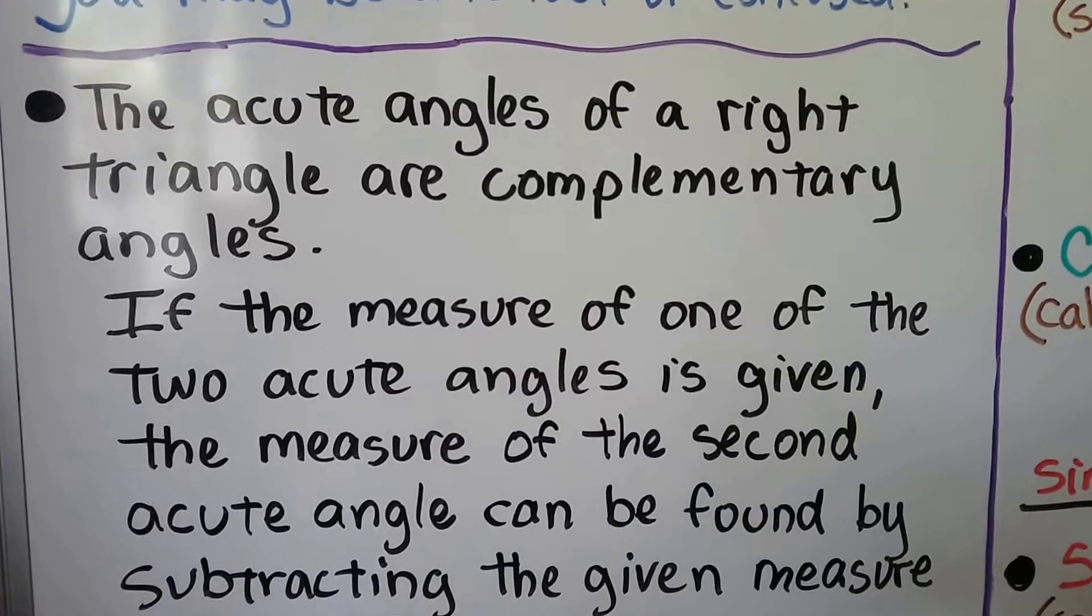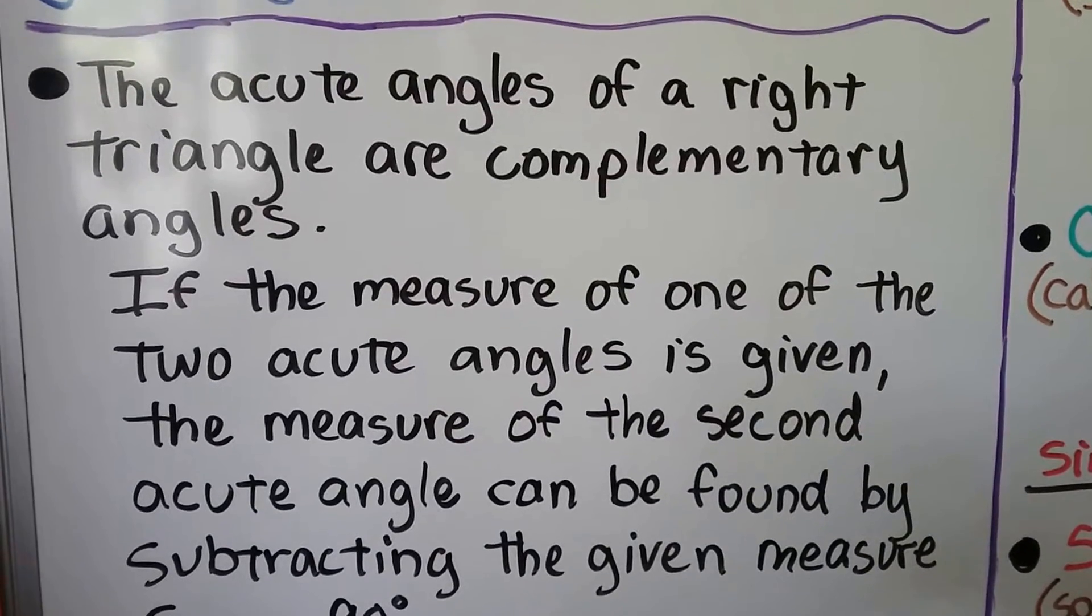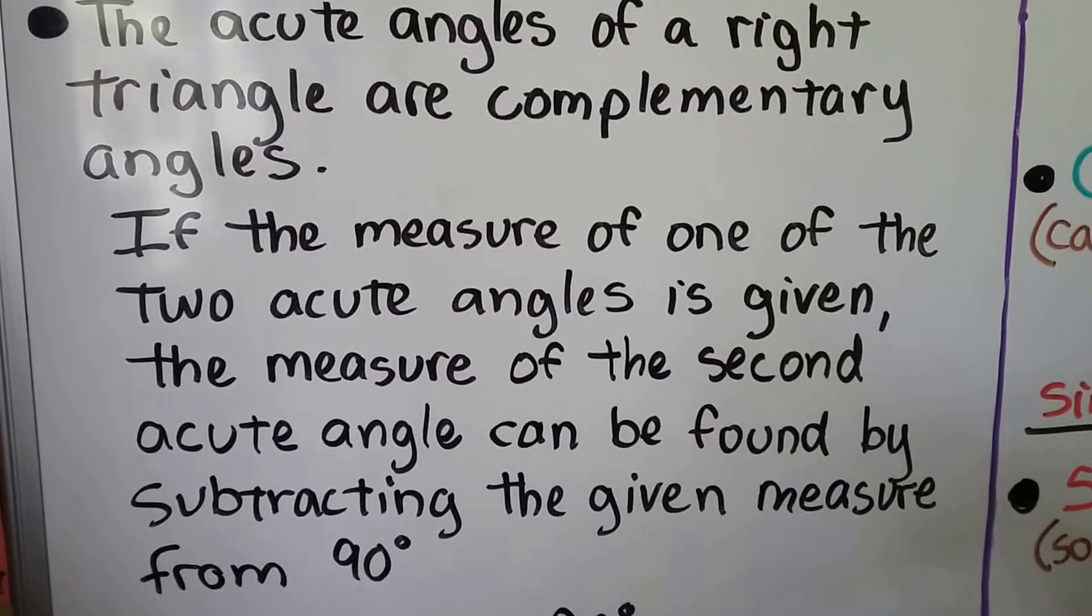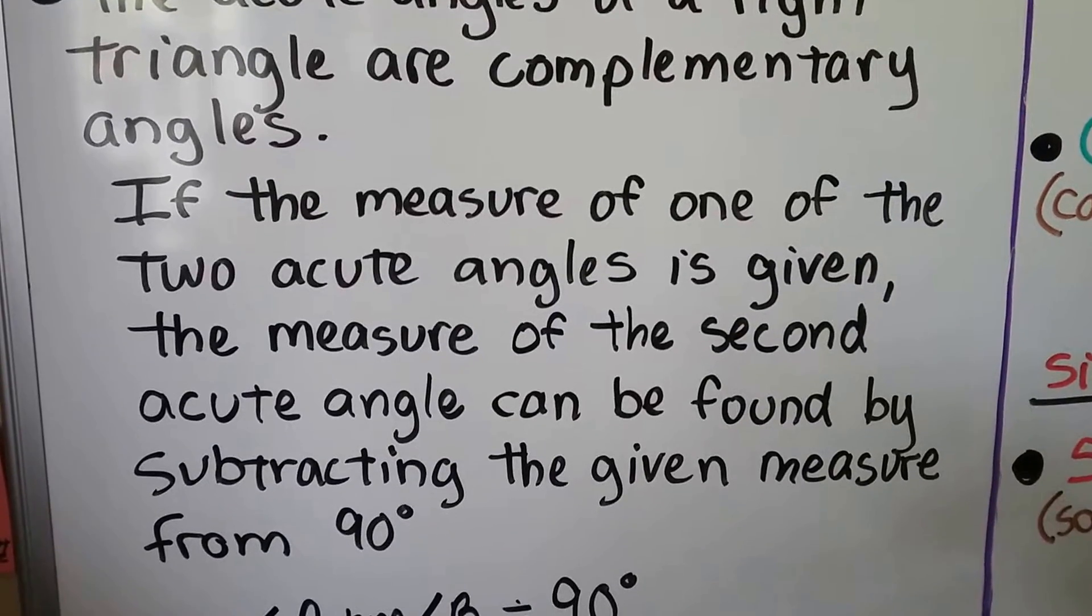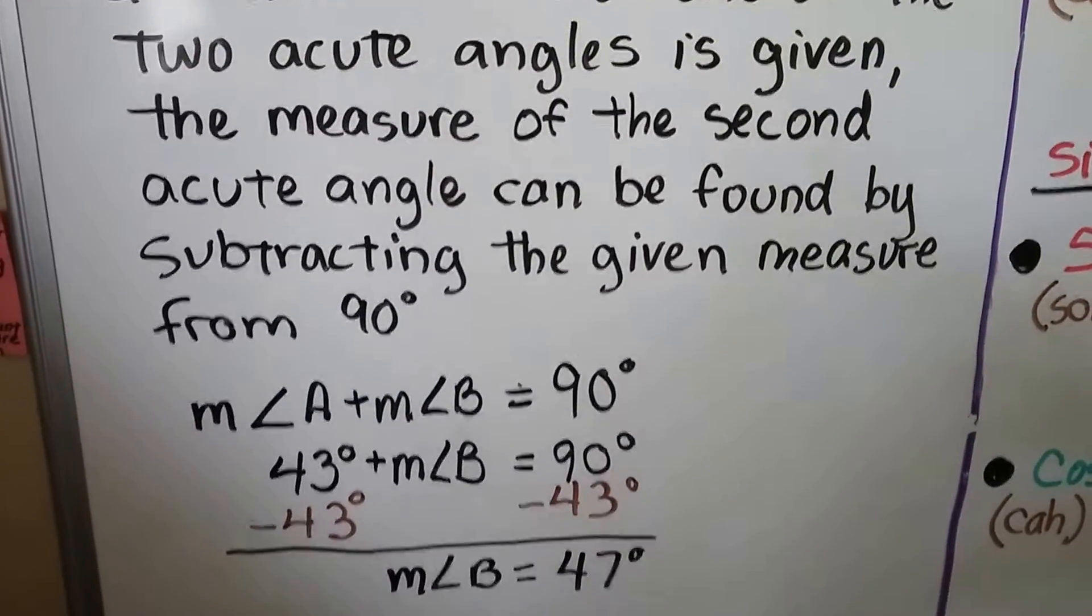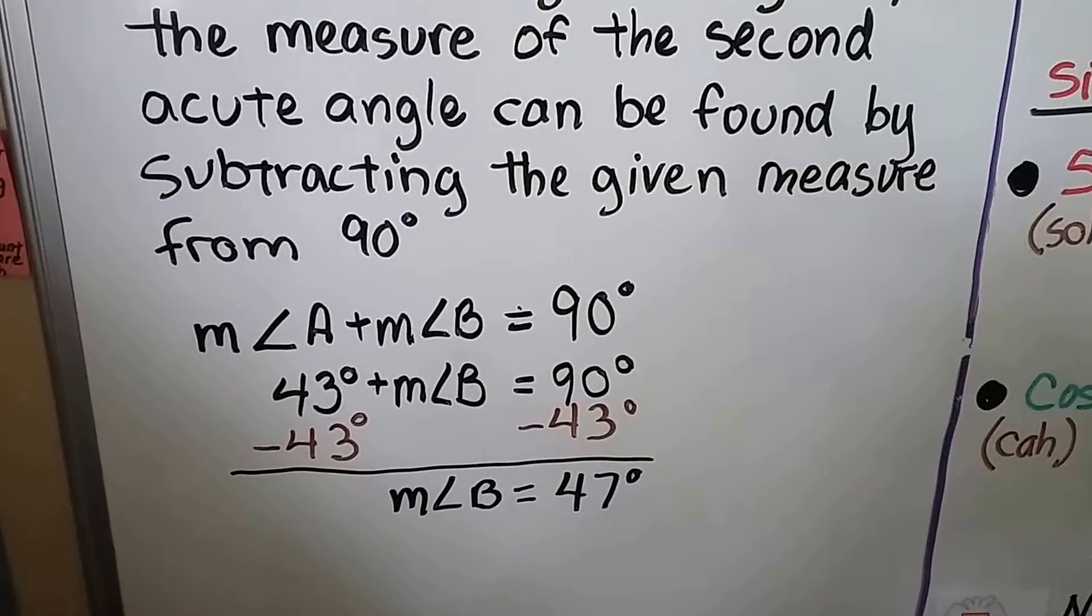The acute angles of a right triangle are complementary angles. If the measure of one of the two acute angles is given, the measure of the second acute angle can be found by subtracting the given measure from 90 degrees.